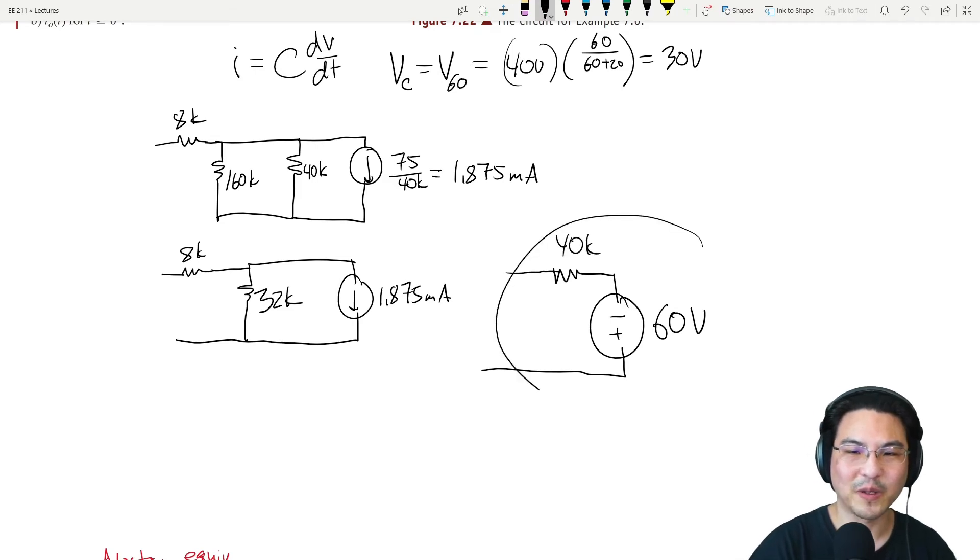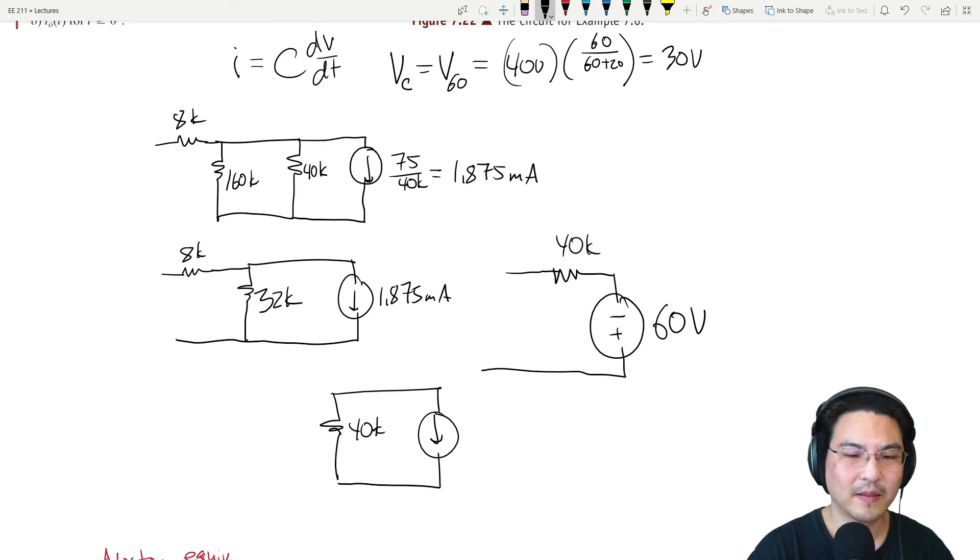One last source transformation, so that's going to be 40k and current source V over R, 60 over 40, which is 1.5 milliamps.